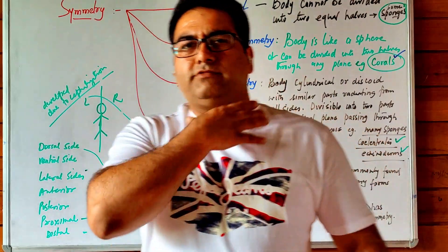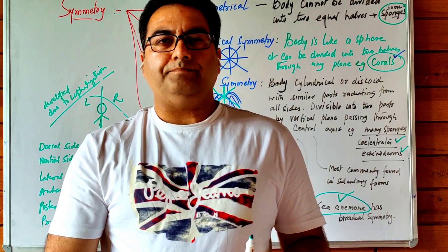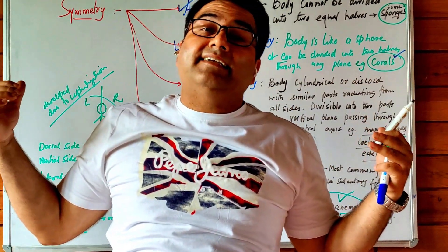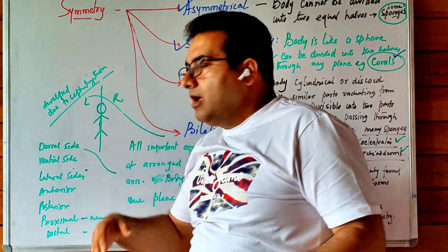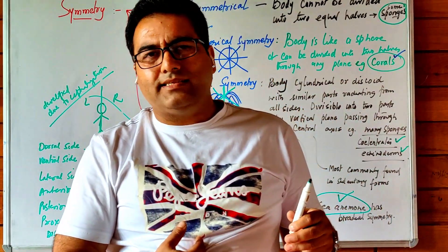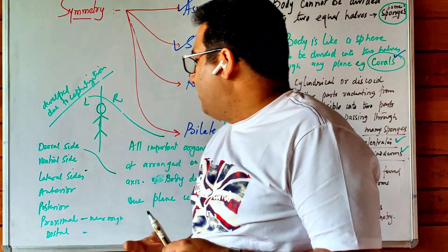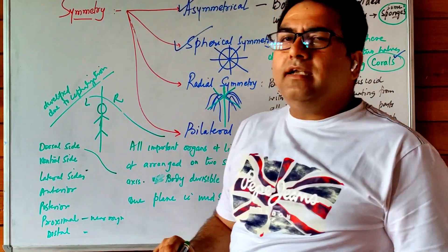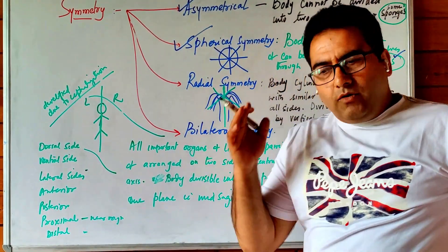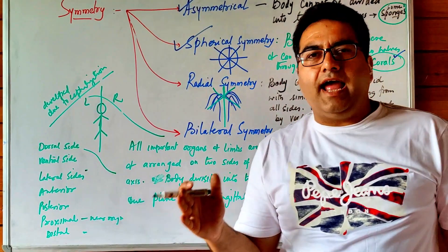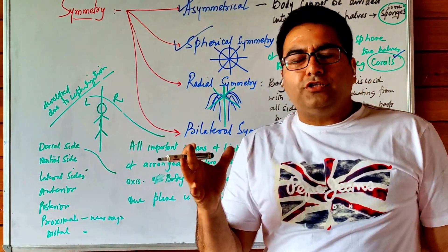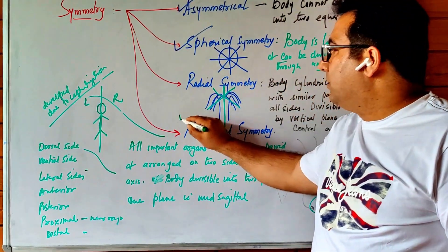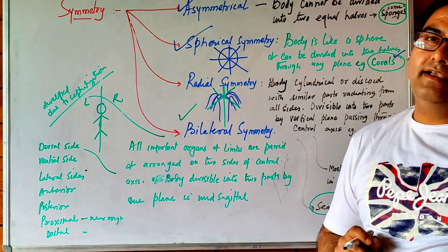In bilateral symmetry, the proximal part is the central disc area (such as the spinal cord), while parts away from the body are the distal parts (such as the limbs). This bilateral symmetry arose due to cephalization — the evolution and emergence of the head — making it the most advanced kind of symmetry.